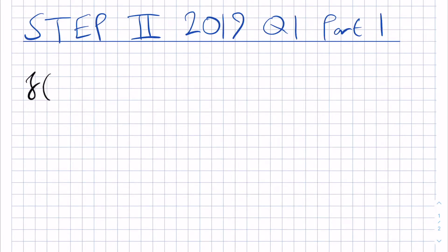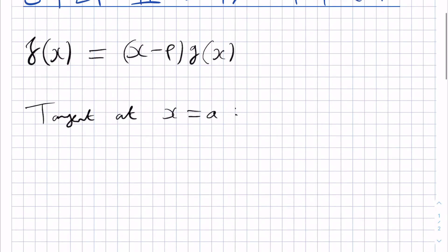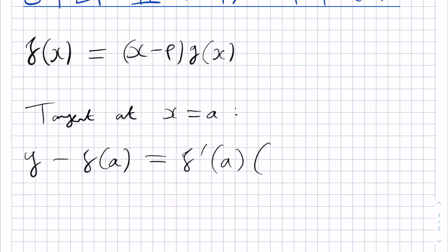We have our f of x as being x minus p times g of x, and in this part of the question we are interested in the tangent to this curve at x equals a. If we use the usual straight line formula, then we have y minus f of a is equal to f prime of a times x minus a. This is the equation of the tangent to this curve at x equals a — essentially y minus y₀ equals m times x minus x₀, where m is the gradient f prime of a, and we have the point a, f of a, that this tangent goes through.